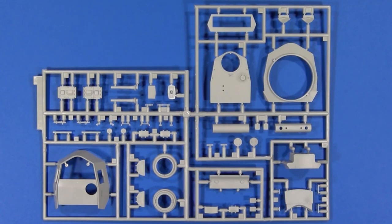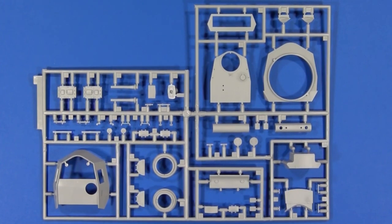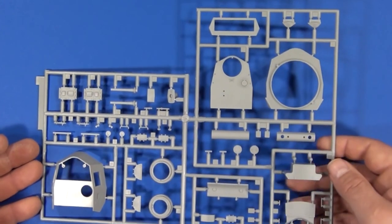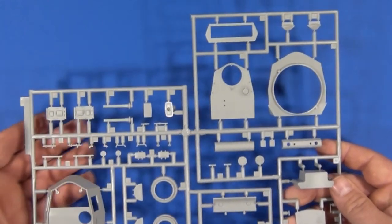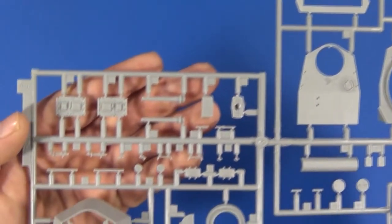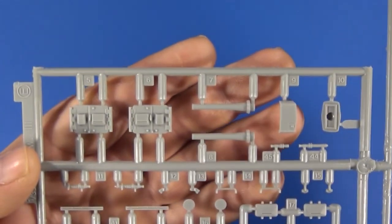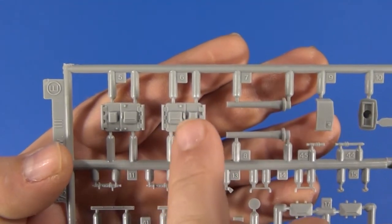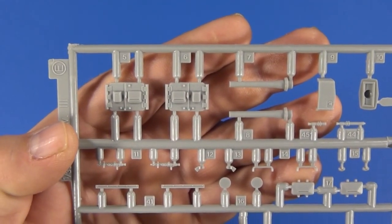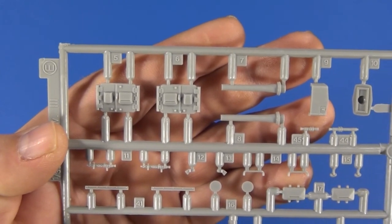This is sprue E. Looks like it's from straight out of a Panzer III kit. It's got all your components to build your turret.